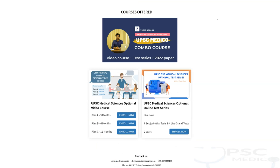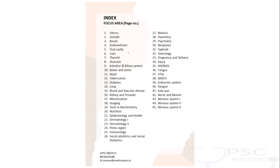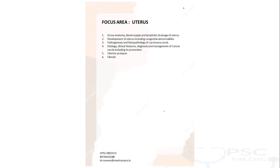This is the index with 45 focus areas — you have uterus, gonads, breast, endometrium, oral cavity, liver, thyroid, stomach, intestine, and biliary system, likewise almost 45 different focus areas wherein all the PYQs are segregated. Let's take uterus as an example — how to approach this focus guide. Even for freshers, third MBBS students, or people who have already given mains with medical science optional, it is easy to comprehend why the whole syllabus is segregated into different focus areas.